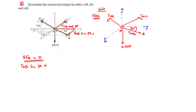Moving on to TAC — TAC also lies on the X axis. However, it lies along the negative X axis, that is behind the particle, and so it becomes negative TAC.